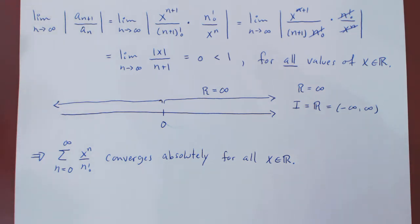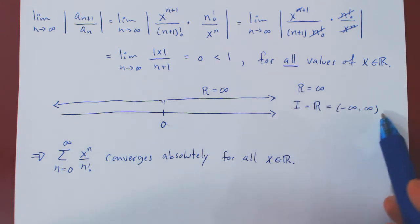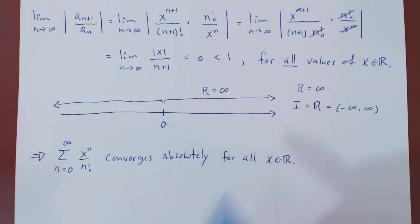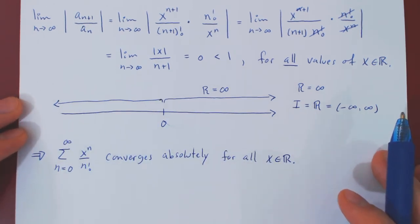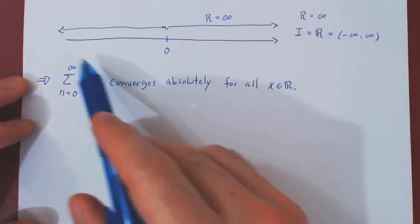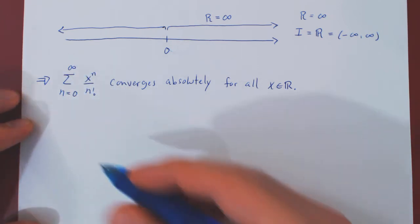But I want to leave you with a teaser. This is really a dream power series as it converges for all values of x. Infinite radius of convergence, the whole real line is the interval of convergence. So this is a function on the entire real line. And what is far from trivial at this point, but we will prove this later, is not only is this a function on the entire real line, it is a very special function.